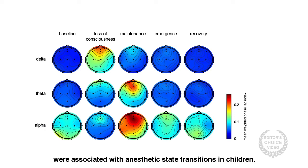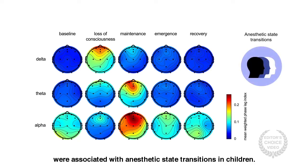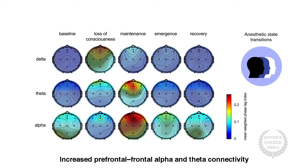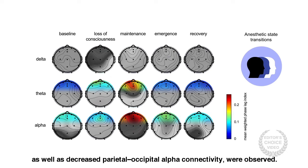Results demonstrated that changes in functional connectivity were associated with anesthetic state transitions in children. Increased prefrontal-frontal alpha and theta connectivity, as well as decreased parietal-occipital connectivity, were observed as a result of general anesthesia.